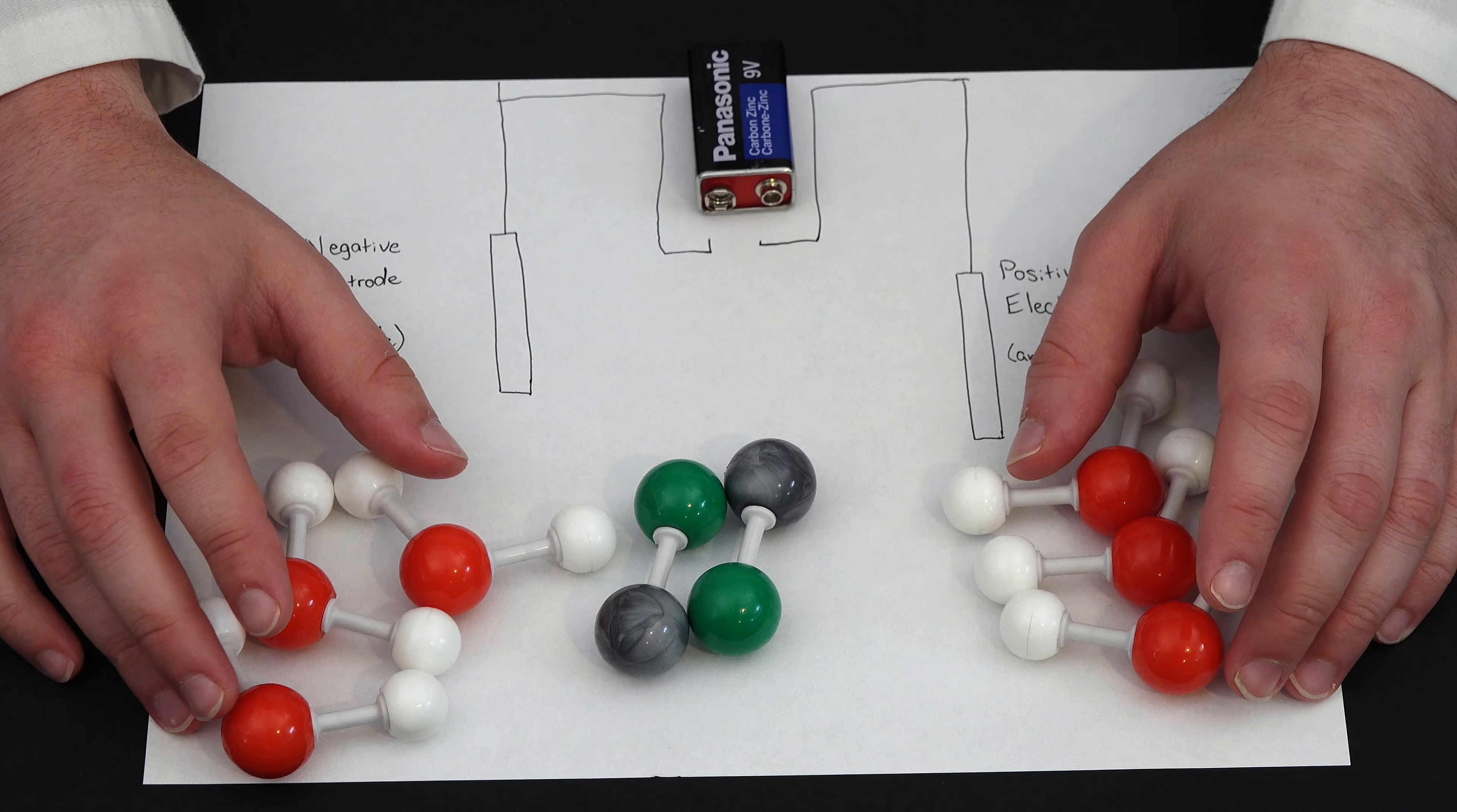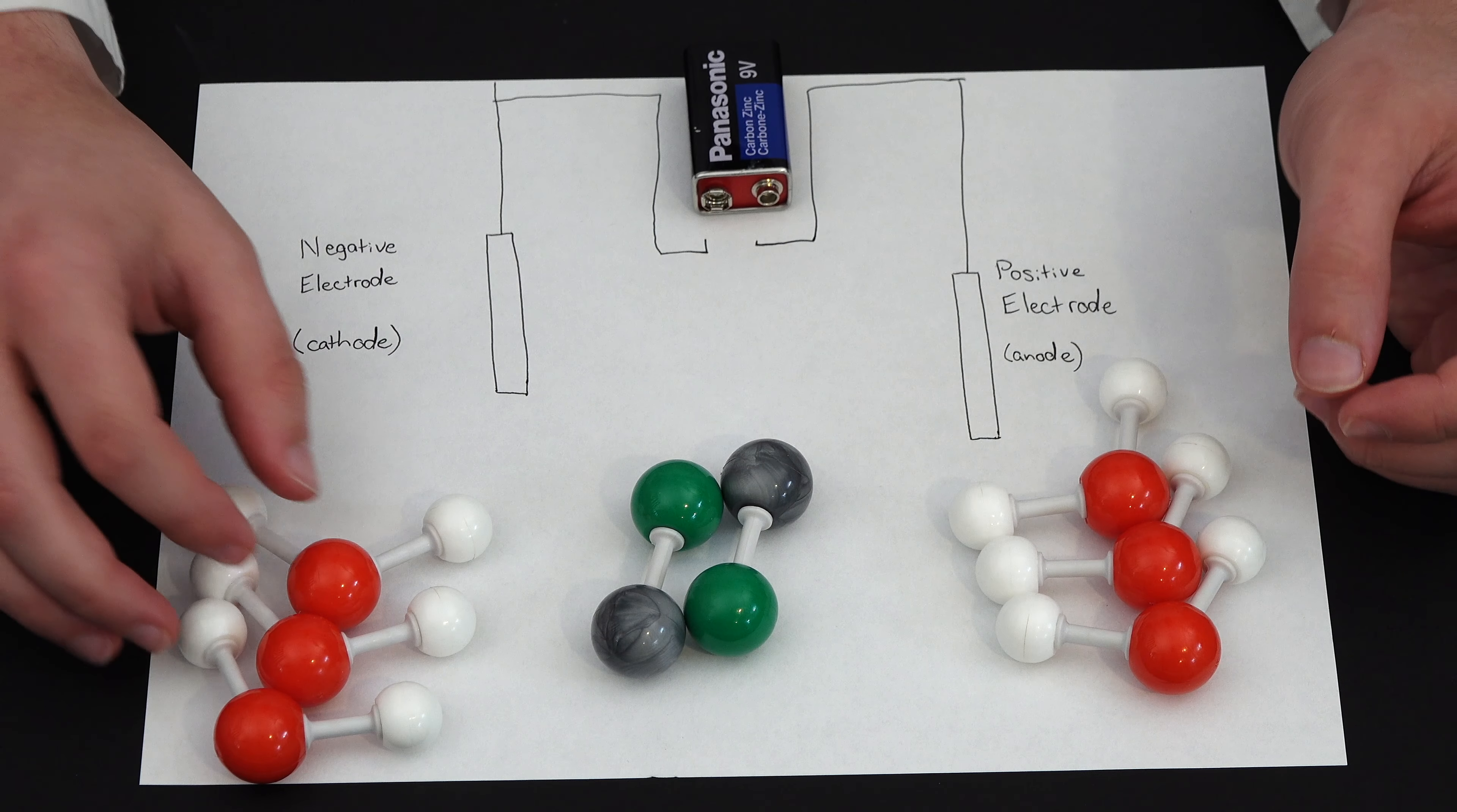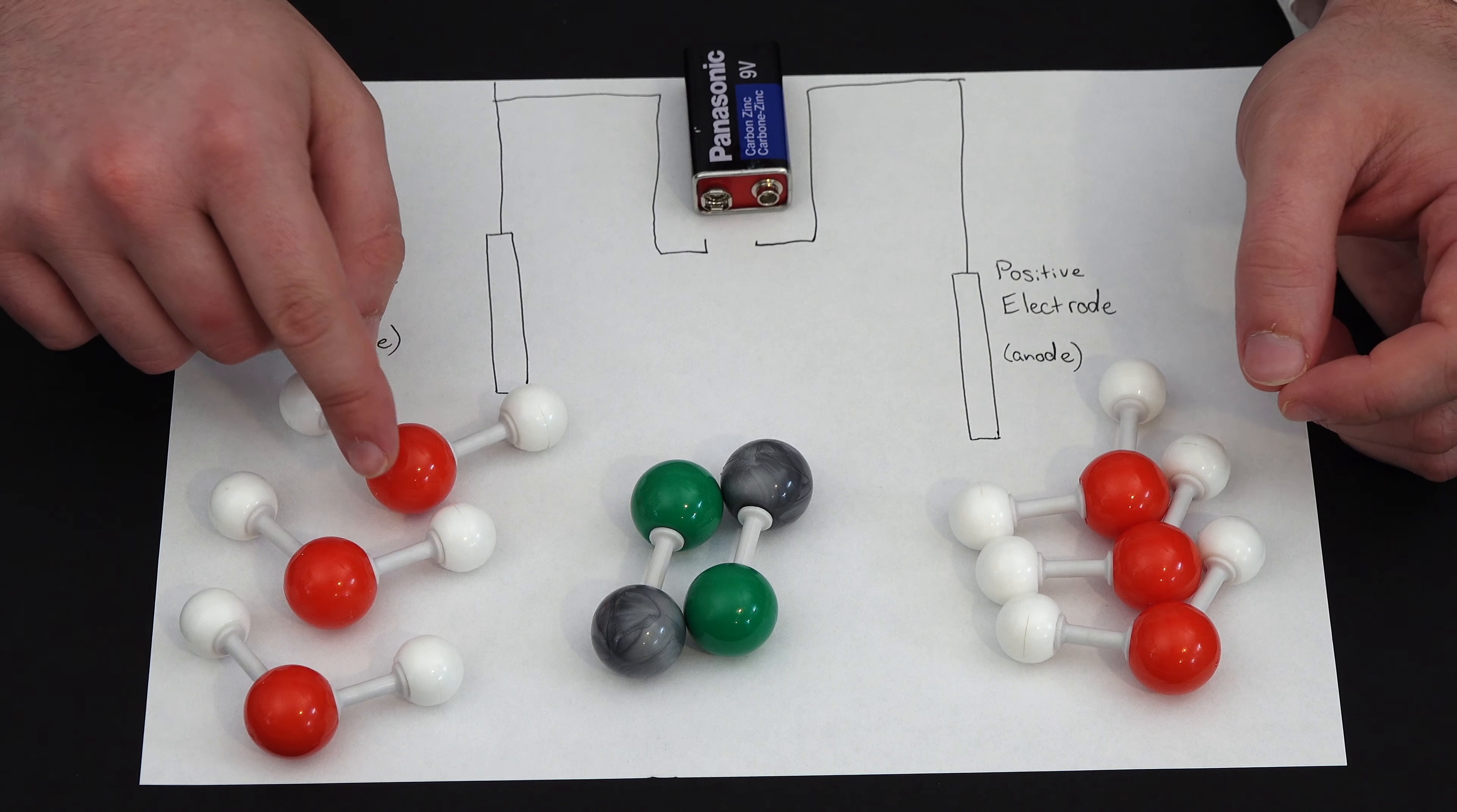Okay, so now let's take a look at what's going on when we do electrolysis when we have salt in the water, or sodium chloride, at least in the water. So in this case, we have the same kind of system going. So the negative terminal is going to be giving electrons to the water to create hydrogen gas.